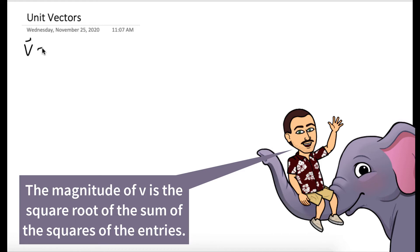We want to find the unit vector in the same direction as the vector 6, negative 8, 24. The way we do this is we find the magnitude of this vector and then we'll just divide by that magnitude.